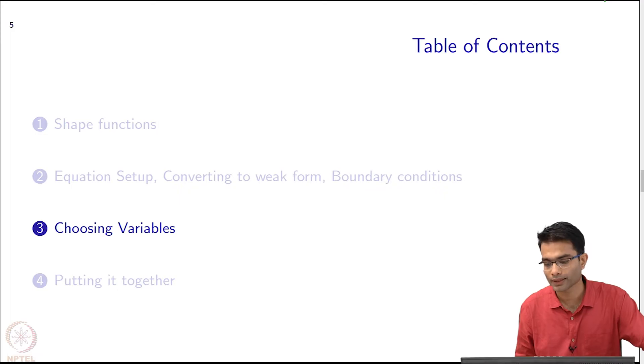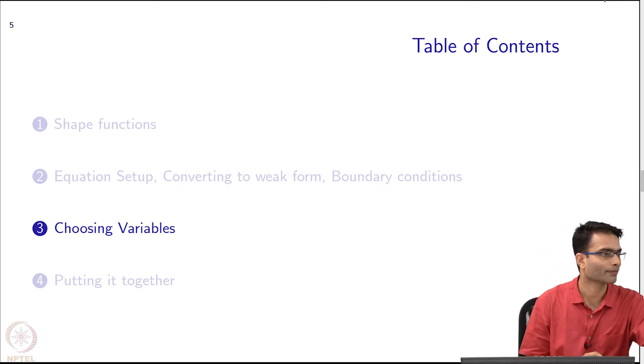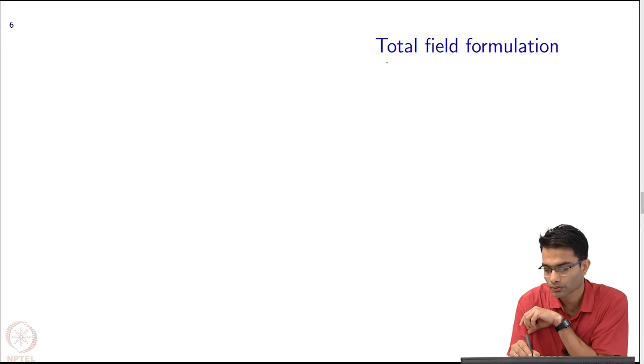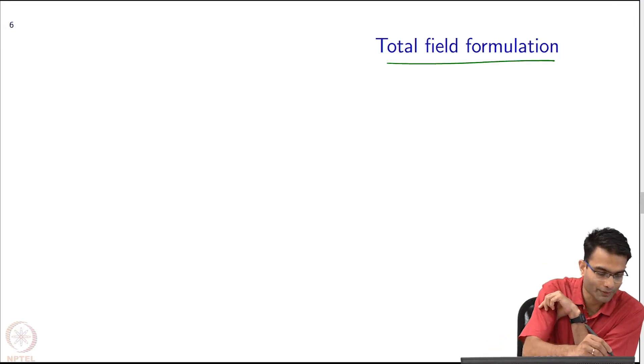Alright. So now, we will come to how do you choose variables? We did not have much of a choice in the case of 1D or we did not spend too much time on it. So we will have a look at it over here. What is called the total field formulation?